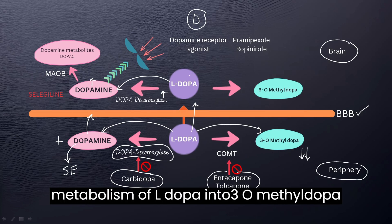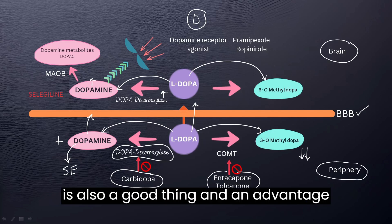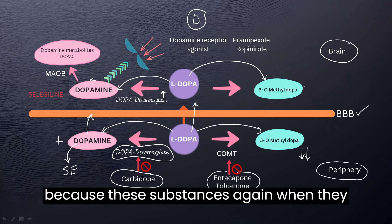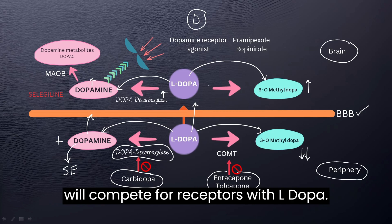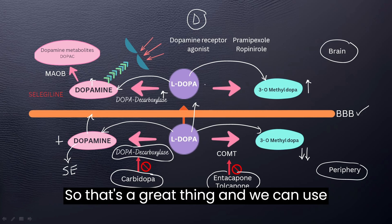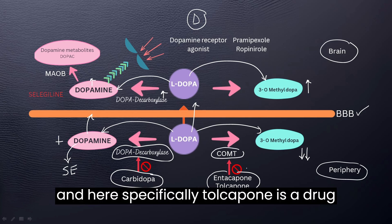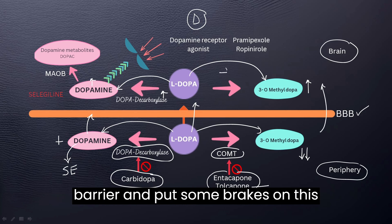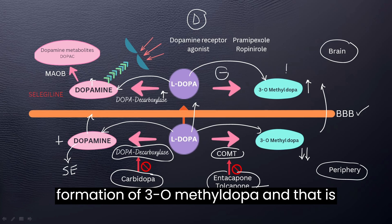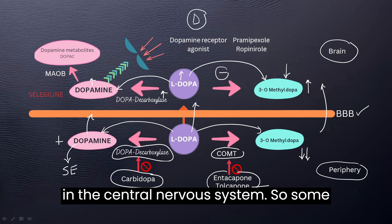Blocking or slowing down the metabolism of L-dopa into 3-O-methyl-dopa in the CNS is also advantageous for the Parkinson's patient, because when 3-O-methyl-dopa is in excess in the central nervous system, it acts as a partial agonist and competes for receptors with L-dopa. We can use COMT inhibitors for this purpose — specifically, tolcapone is able to penetrate the blood-brain barrier and reduce this reaction, leading to less 3-O-methyl-dopa formation, increased L-dopa availability, and ultimately increased dopamine levels in the CNS.